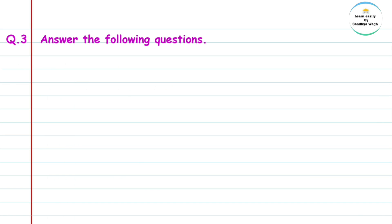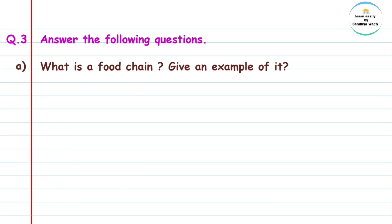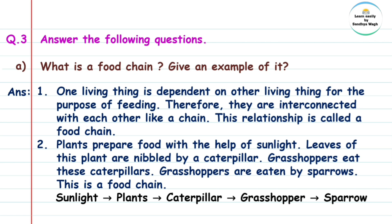Next question: Answer the following questions. What is a food chain? Give an example. Answer: One living thing is dependent on another living thing for the purpose of feeding; therefore they are interconnected with each other like a chain. This relationship is called a food chain.